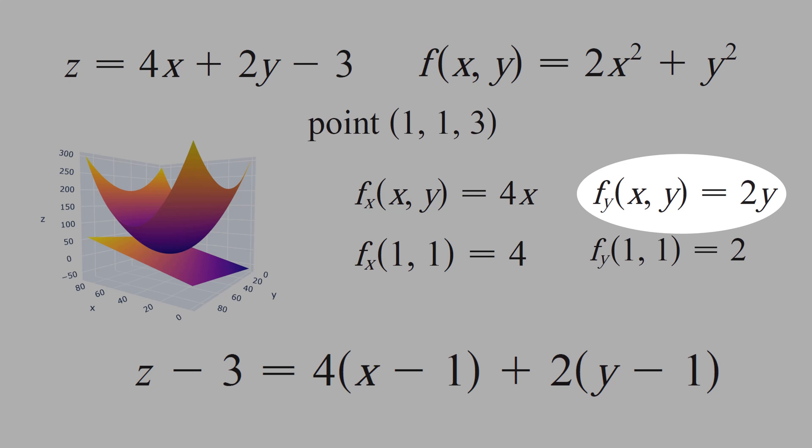And if you take the derivative in respect of y, we get 2y. That at points 1 and 1 is equal 2. That means 4 is the slope of x, and 2 is the slope of y.